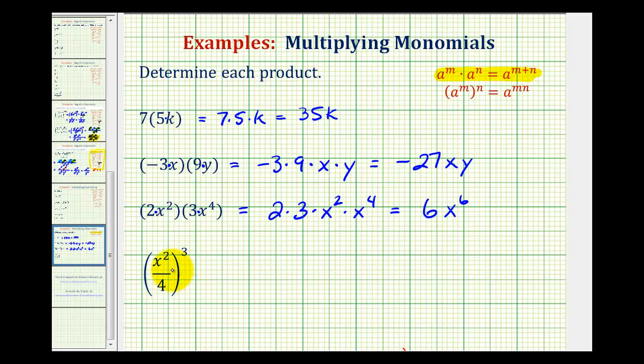There's a couple of ways of doing this. We could just expand this and write three factors of x to the second over four, but we could also apply this rule here that says if we have powers to powers, we multiply the exponents. We do need to recognize that this would be four to the first. And then if we multiply the exponents, we would have x to the power of two times three, that's six. And we'd have four to the power of one times three, that's four to the third. We can evaluate the denominator. We would have x to the sixth over four to the third, which is 64.